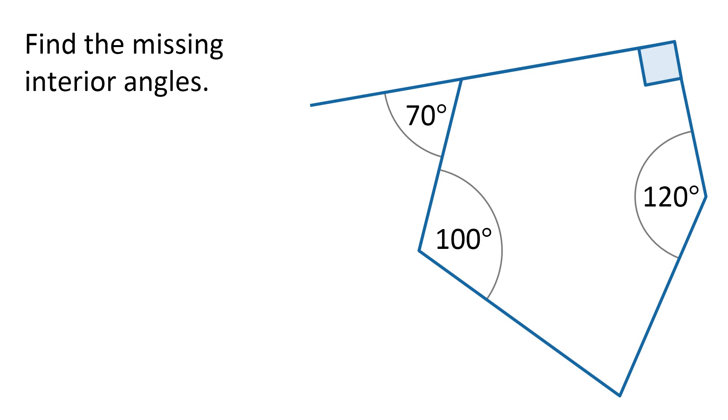Working through these, we're going to need to know a couple of things. First of all, about our relationship between interior and exterior angles, and also about the total sum of the interior angles of this shape.